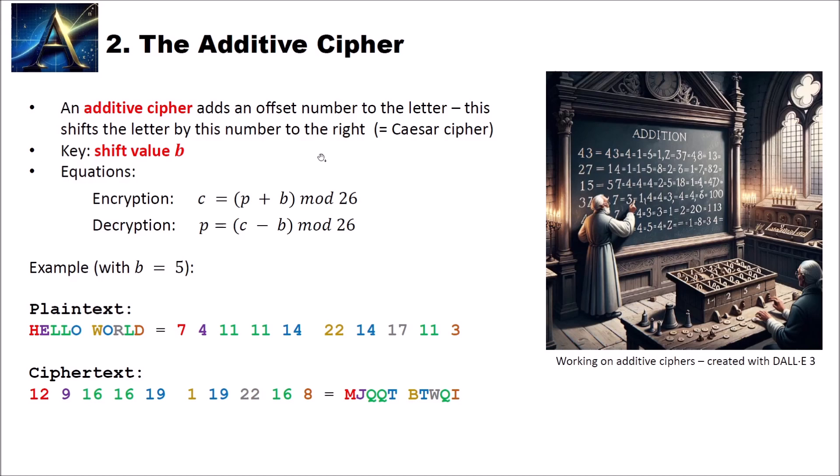We can express this with mathematical equations. For encryption our ciphertext letter c is equal to our plaintext letter p plus the shift value b mod 26. And the decryption is the inverse. First we take our ciphertext letter, subtract our shift value mod 26 and we obtain our plaintext letter.